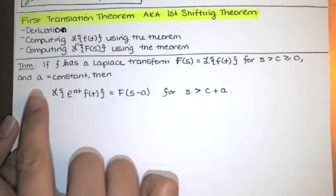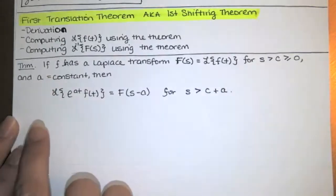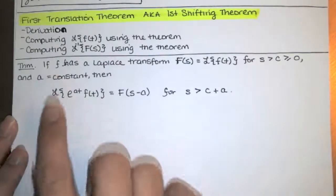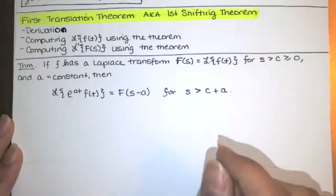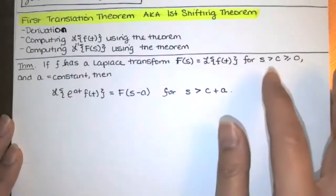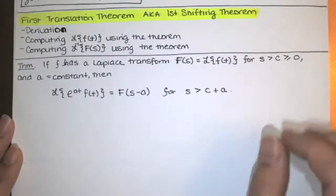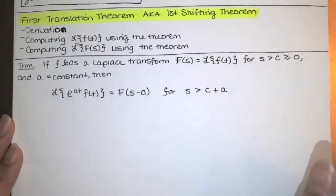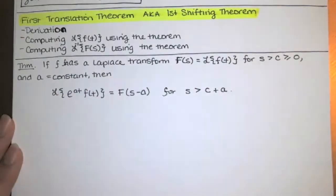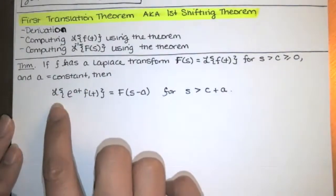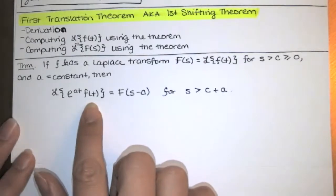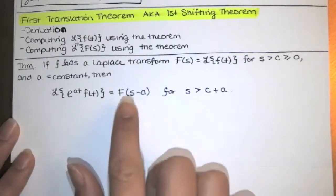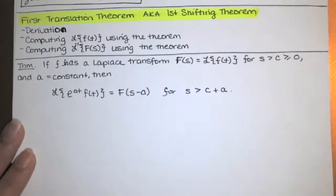Let's do the derivation now. First, I'll state the theorem. If f has a Laplace transform F of s for all s greater than c, where c is greater than or equal to zero, and a is some constant, then the Laplace transform of e to the at times f of t is equal to F of s minus a.